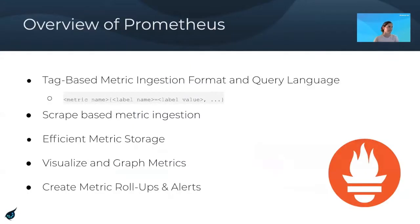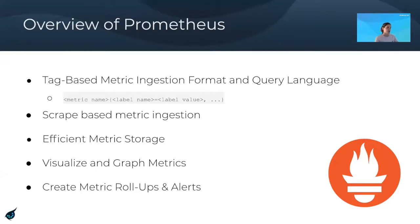So monitoring with Prometheus. Prometheus is a single binary metric solution. It comes with a tag-based metric ingestion format and query language called PromQL. It is a scrape-based metric ingestion solution — it is pull-based. It comes with an efficient metric storage solution, and also the ability to visualize and graph metrics. Many users use Grafana for this, but Prometheus does have its own out-of-the-box solution as well. You can also create alerts using Prometheus Alert Manager and metric roll-up rules.